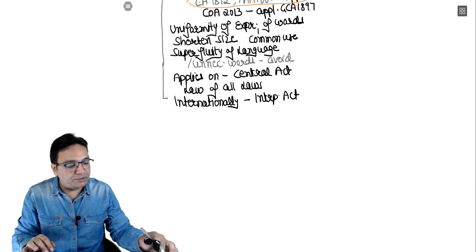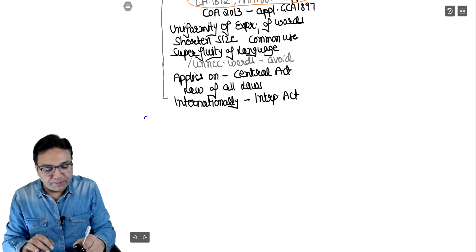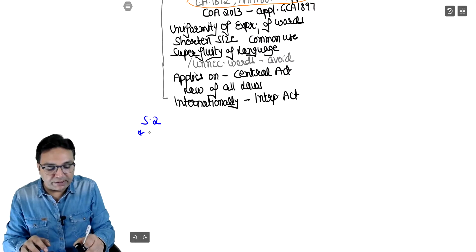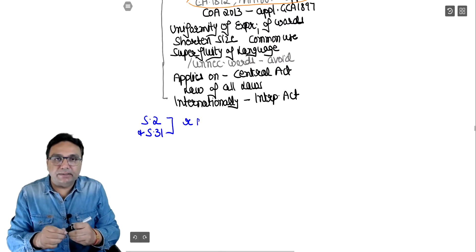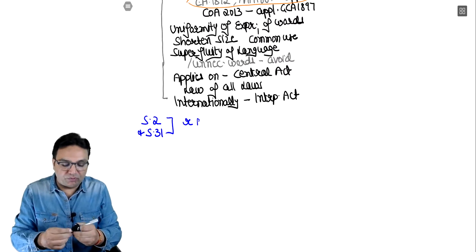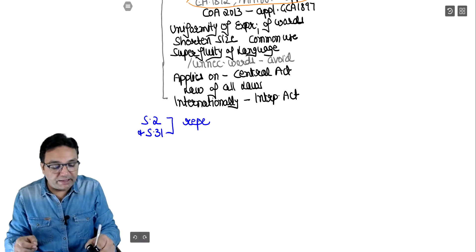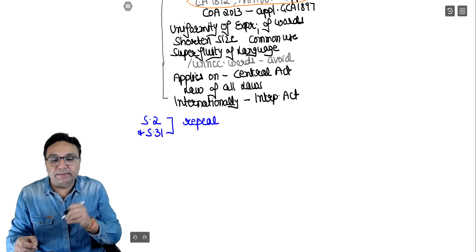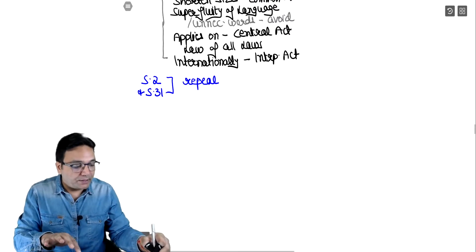Coming to section 2 - we won't stay in between because both section 2 and section 31, as already mentioned, have been repealed - meaning they are no more, it's just like they never existed. Now here is an interesting thing: every act has definitions in section 2, but in GCA the definitions are found inside section 3.